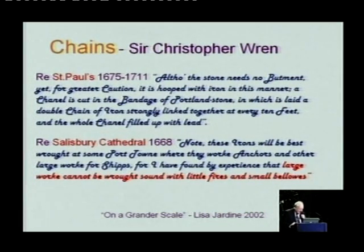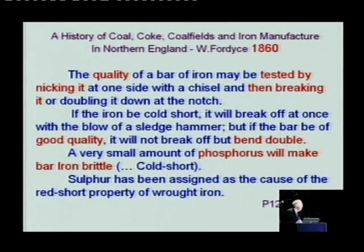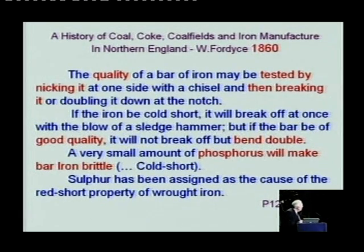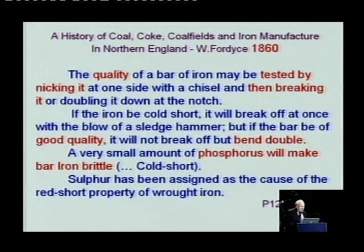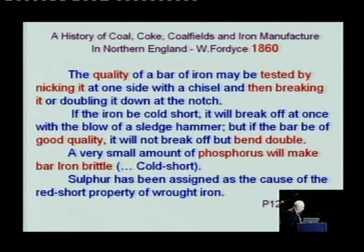The third piece of history refers to a facsimile of a book by W. Fordyce in 1860, which I picked up in Newcastle about 30 years ago. He has a definite statement: 'The quality of a bar of iron may be tested by nicking it on one side and then breaking it or doubling it down at the notch. If the iron be cold short, it will break off at once with the blow of a sledgehammer, but if it be a good quality, it will not break but bend double. A very small amount of phosphorus will make bar iron brittle — cold short — and sulphur has been assigned as the cause of the red short property of wrought iron.' It's a fascinating book, mainly about coal and coke, but there are wonderful chapters at the end about iron, and Mr Bessemer's steel does feature, giving mechanical tests.